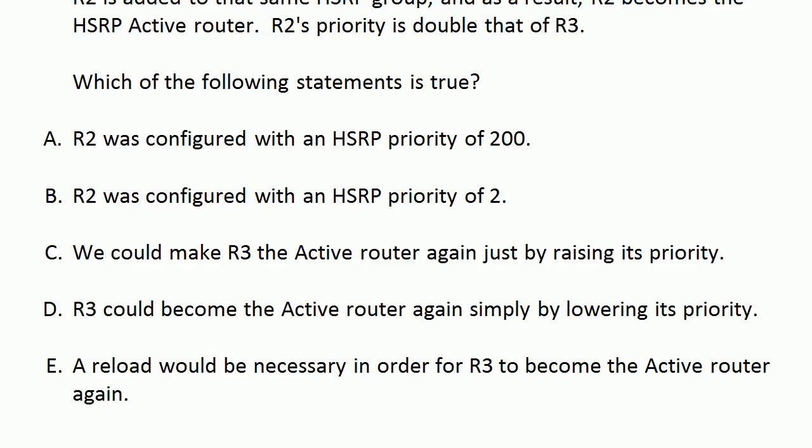A: Router 2 was configured with a priority of 200. B: Router 2 was configured with a priority of 2. C: We could make R3 the active router again just by raising its priority. D: R3 could become the active router again simply by lowering its priority. E: A reload would be necessary in order for R3 to become the active router again.